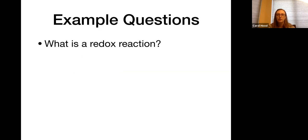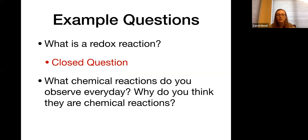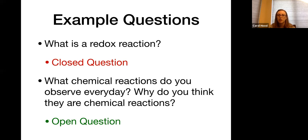'What is a redox reaction?' is an example of a closed question — once it's answered, there's nowhere else to go. Versus: 'What chemical reactions do you observe every day? Why do you think they are chemical reactions?' These are open questions. You'll get lots of different responses, some involving redox reactions and some not, but you can then start to get at the characteristics of chemical reactions and eventually redox reactions.